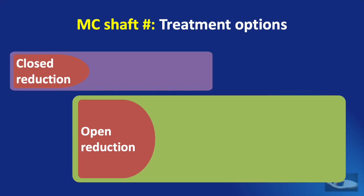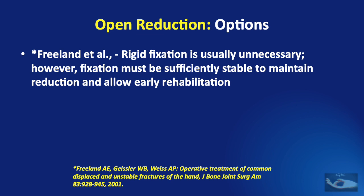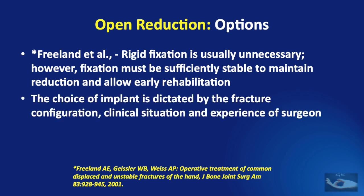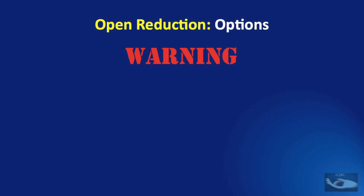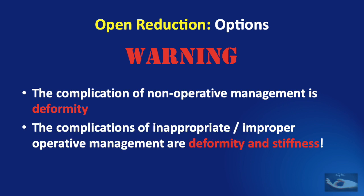There are different techniques available for fixation after open reduction: K-wire fixation, composite or tension band wiring, cerclage wiring and intraosseous wiring, interfragmentary screw fixation, and plate and screw fixation. A 2001 study stated that rigid fixation is usually unnecessary; however, fixation must be sufficiently stable to maintain reduction and allow early rehabilitation. The choice of implant is dictated by the fracture configuration, clinical situation, and the experience of the surgeon. Importantly, the complication of non-operative management is deformity, whereas complications of improperly done operative management are both deformity and stiffness.